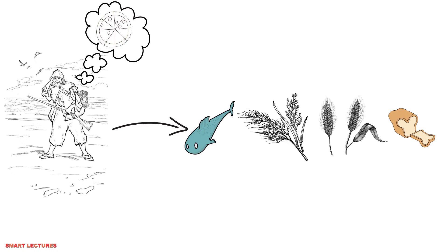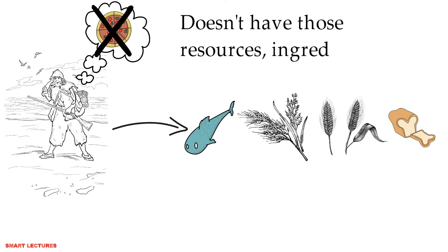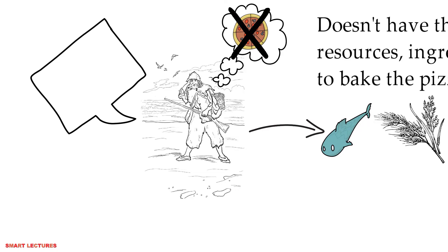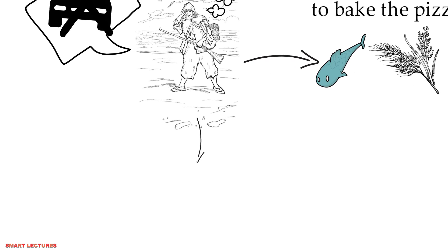If he imagines having pizza there, can he have it? No, because he doesn't have that oven or the ingredients to bake pizza. Or if he wishes to drive a flash car on this lonely island, can he drive? No, because he can't arrange a car there.